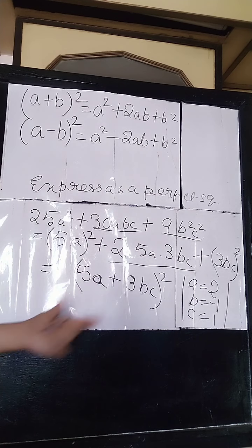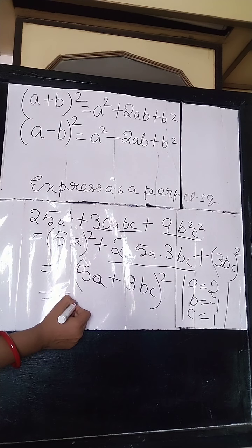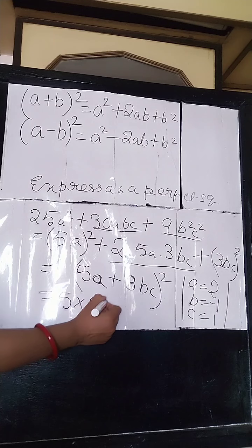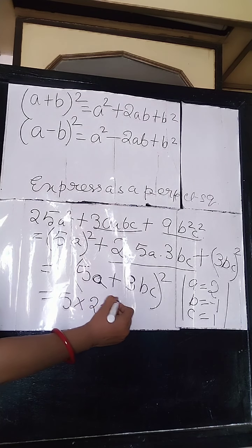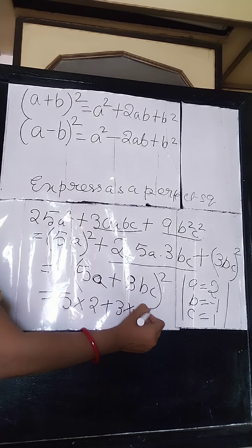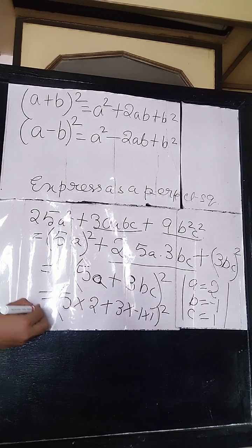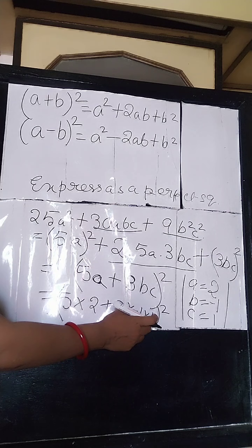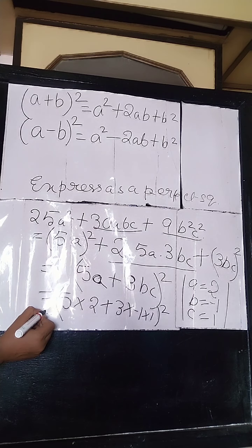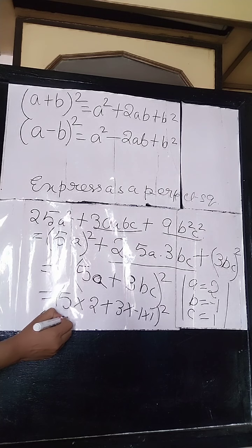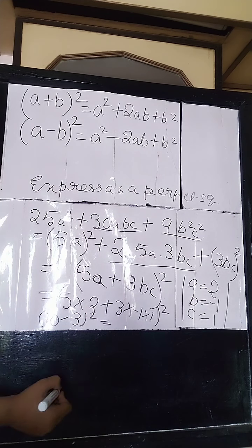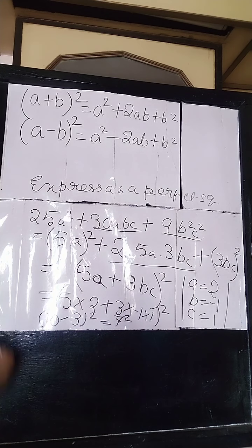You will write 5 into a, where a is 2, plus 3 into b into c, where b is minus 1 and c is 1, whole square. So 5 into 2 is 10, and 3 into minus 1 into 1 is minus 3. That gives 10 minus 3 whole square, which is 7 whole square, and 7 squared is 49. So 49 is the answer.